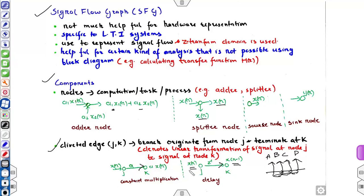We can also perform a delay operation by specifying the edge weight as z-inverse. So if the signal at node j is x(n), and the weight is z-inverse, the signal at node k will be x(n-1) — a delayed version of x(n). For example, if sample B is at node j, then at node k the sample will be A (one cycle delayed). In the next cycle, C arrives at j and B is at k; then D arrives at j and C is at k. So there is a gap of one clock cycle — this is how the delay operation works.